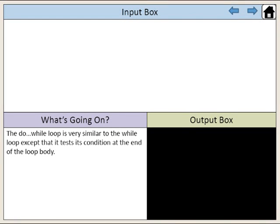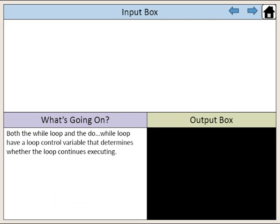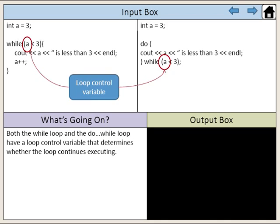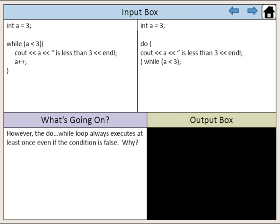The do-while loop is very similar to the while loop, except that it tests its condition at the end of the loop body. Both the while loop and the do-while loop have a loop control variable that determines whether the loop continues executing. However, the do-while loop always executes at least once, even if the condition is false.